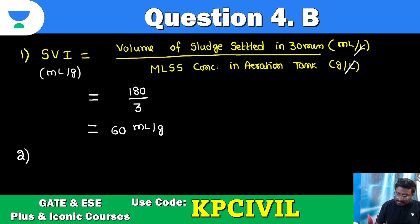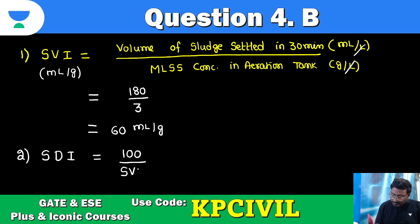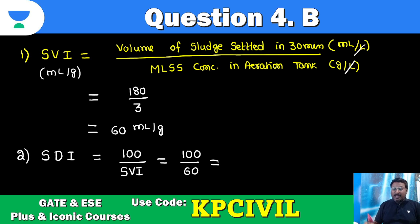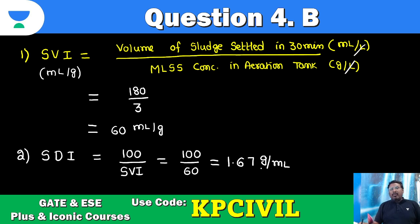Second: SDI — Sludge Density Index. Formula is 100 divided by SVI. So SDI = 100 / 60 = 1.67 gram per cc (gram per mL).